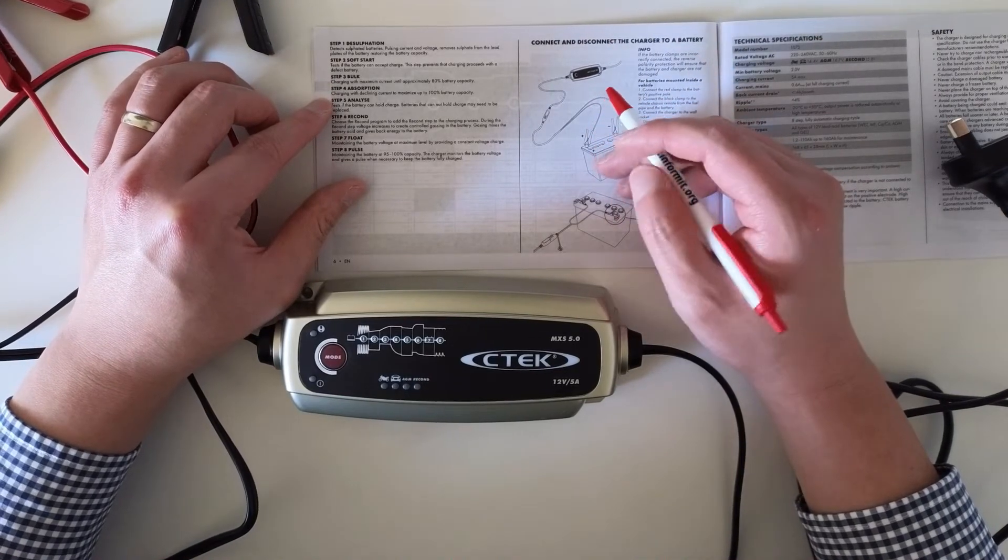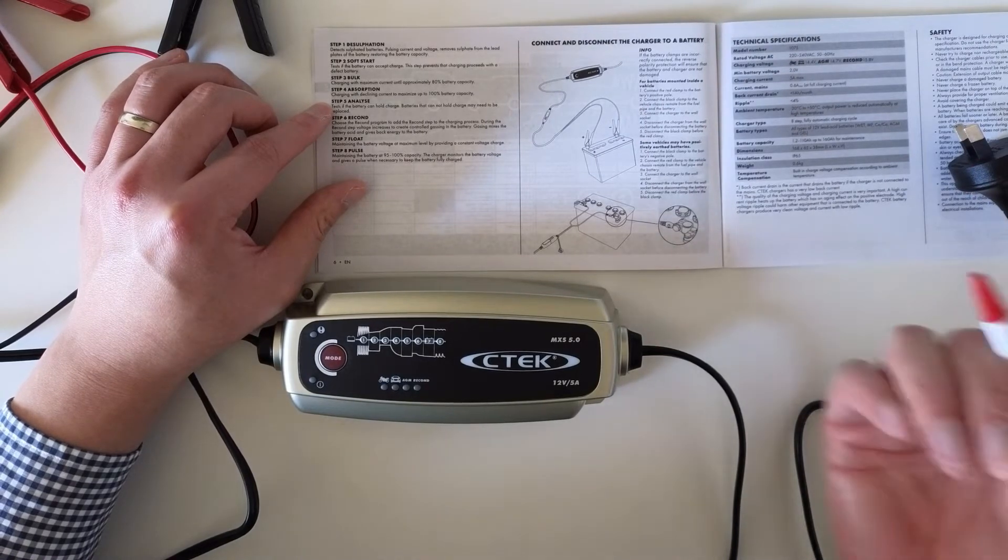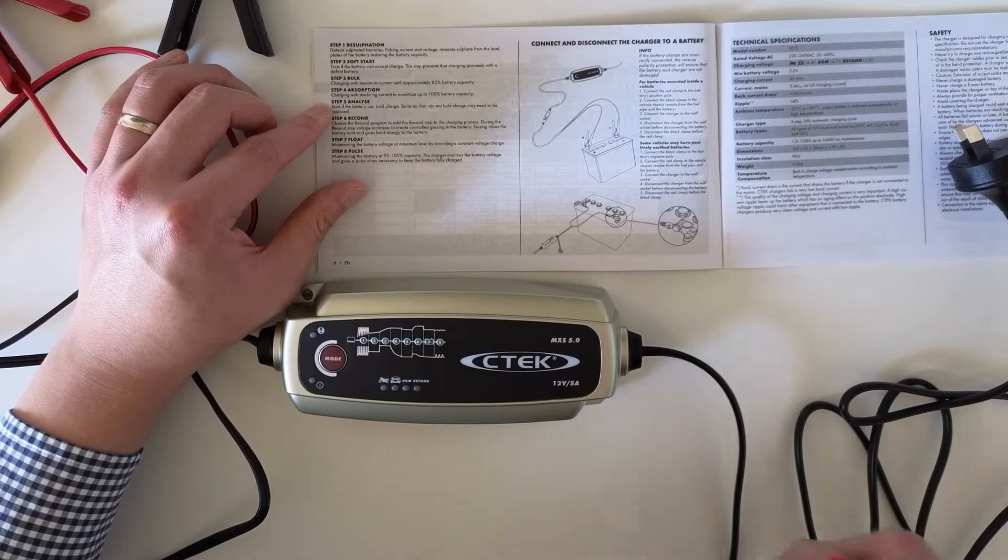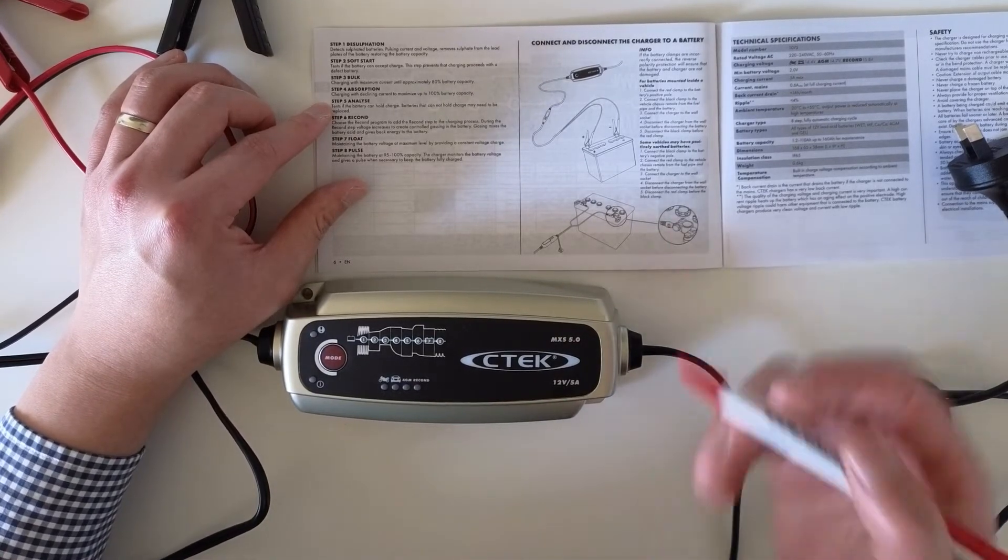After step four, step five is to analyze the battery. You would test whether the battery can hold charge. If the battery cannot hold charge, that means the battery is faulty and you might need to replace the battery.